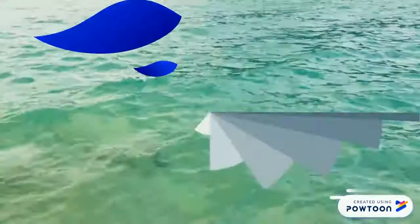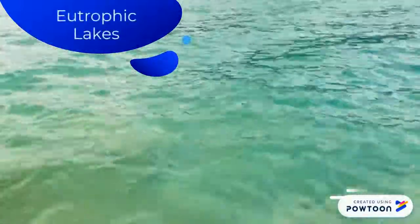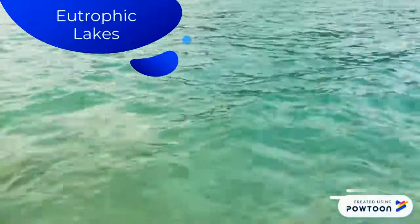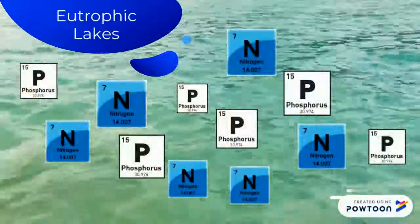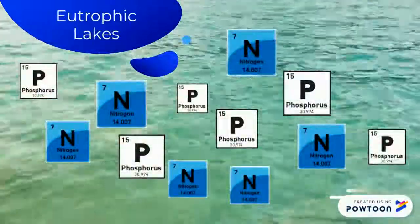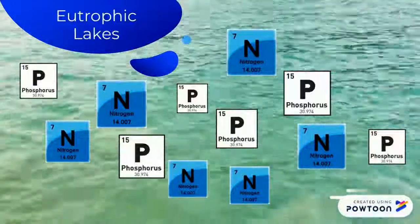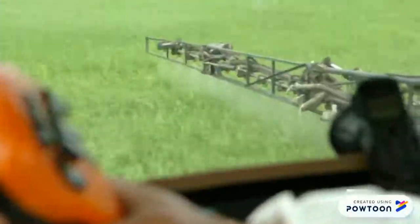Next, eutrophic lakes, which are pretty much the opposite of oligotrophic lakes, have an abundance of nutrients — so an abundance of phosphorus and nitrogen — which usually comes from over-fertilization.